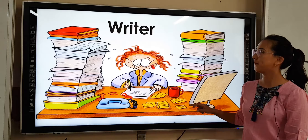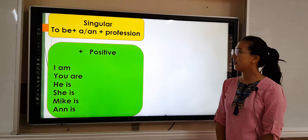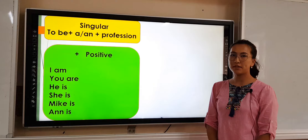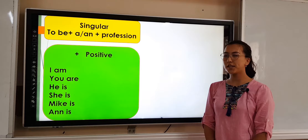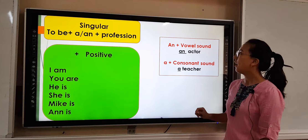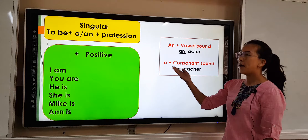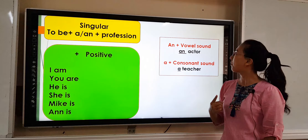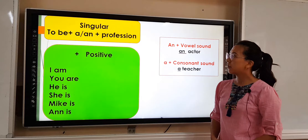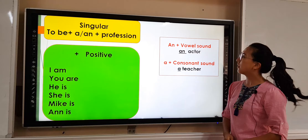To speak about your profession, we use 'to be': to be plus 'a' or 'an' plus profession. Let's look at 'to be' positive: I am, you are, he is, she is, Mike is, it is. It is important to use the article 'a' or 'an' before the profession if we are talking about one person. We use 'an' before the vowel sound. For example, 'an actor' — here actor starts with a vowel sound, so we use 'an'.